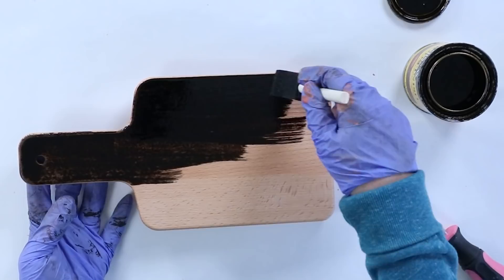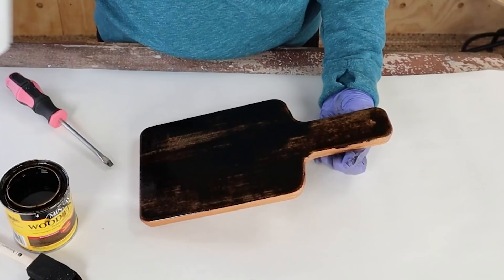Now to stain an item, what I like to do is just use a foam brush, and I'm going to paint it onto my piece. And I'll immediately come in, take the stain off with a paper towel.